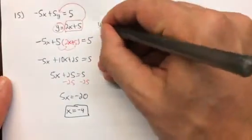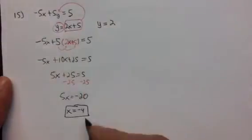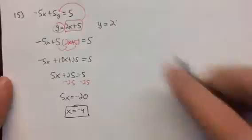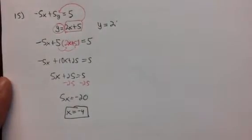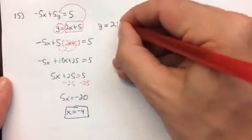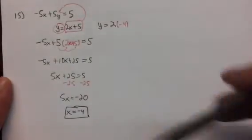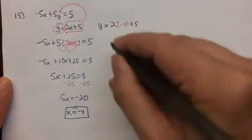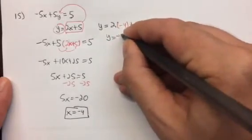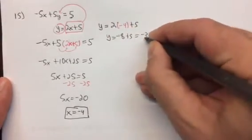What we're going to do is we're going to rewrite it. y equals 2, and then instead of 2 times x, we're going to substitute in what x is equal to, 2 times negative 4. x is negative 4 plus 5. So y is negative 8 plus 5, which is negative 3.